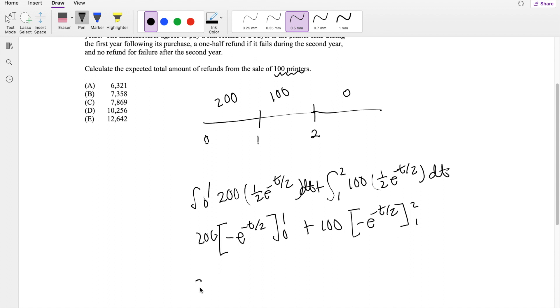The upper limit here is going to give you 200 times negative e to the negative 1 over 2, minus negative 1, since e to the 0 is just 1. Plus 100 times negative e to the negative 2 over 2, which is negative e to the negative 1, minus negative e to the negative 1 half.